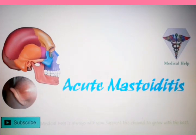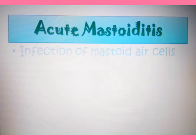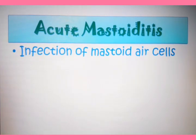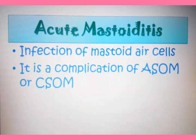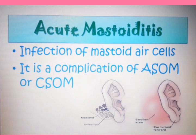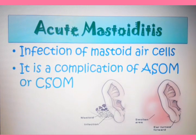Hello friends, welcome to Medical Health. Today our topic is acute mastoiditis. Acute mastoiditis is the infection of mastoid air cells, and this is a complication of ASOM — acute suppurative otitis media — or CSOM, which means chronic suppurative otitis media. In this diagram you can see, behind the pinna, the mastoid bone. In the mastoid bone there are many mastoid air cells where the infection occurs.